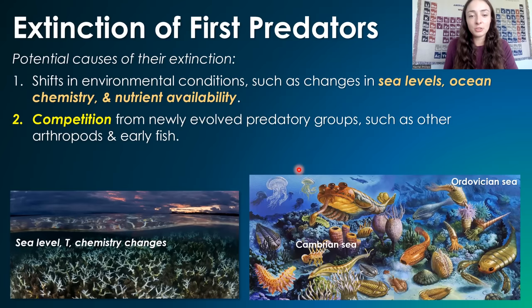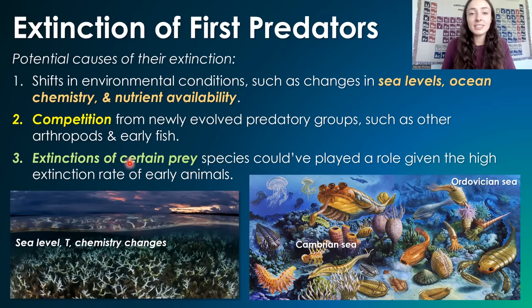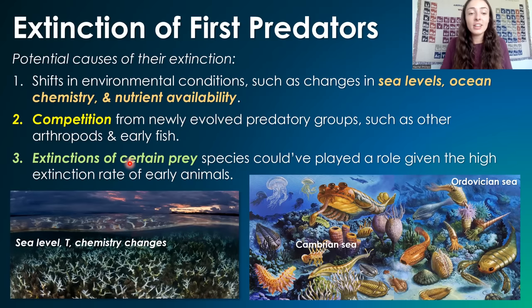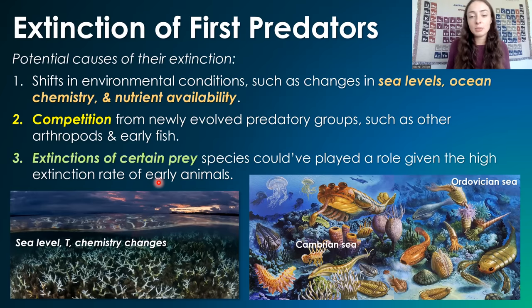Competition was another likely contributing factor to the extinction of anomalocaridids, as newly evolved predatory groups were coming onto the scene — like other arthropods, early fish, and eurypterids, the big sea scorpions. There may also have been extinctions of certain prey organisms that anomalocaridids liked to eat, and if their food source went extinct, they would be hit pretty hard.